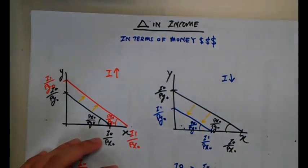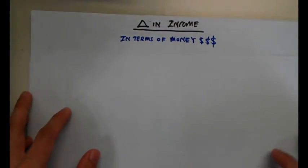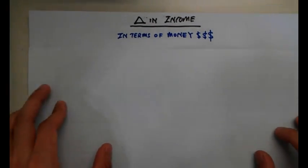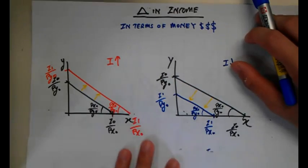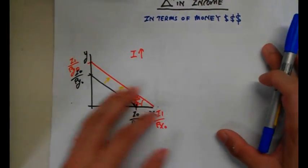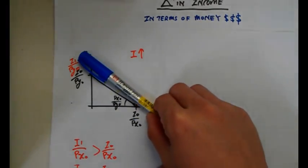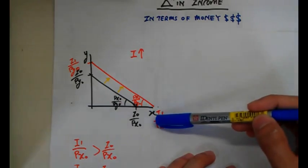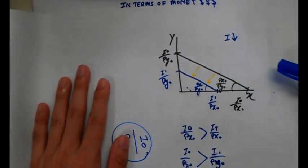A change in income refers to the individual's monetary income — the amount of cash they receive. There are only two things that can happen: if the individual experiences an increase in income, their budget constraint shifts outwards and real income is higher. If income drops, the budget constraint shifts inwards in the opposite direction.